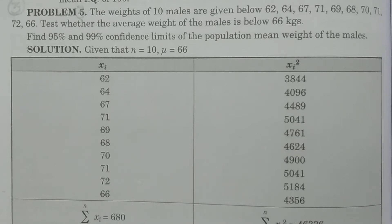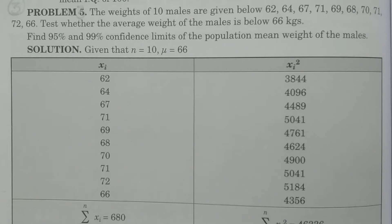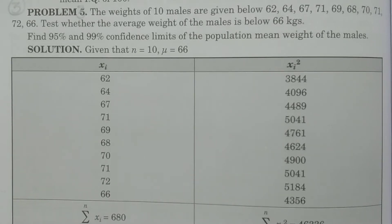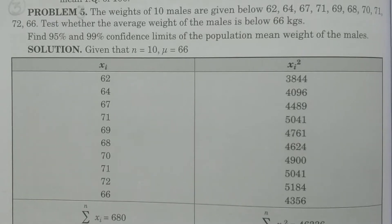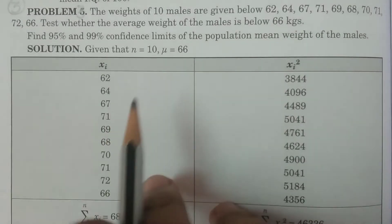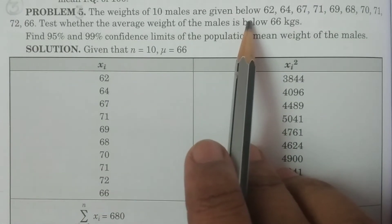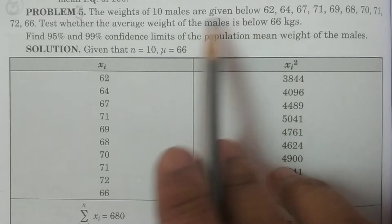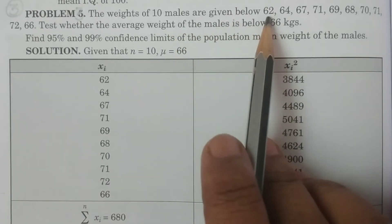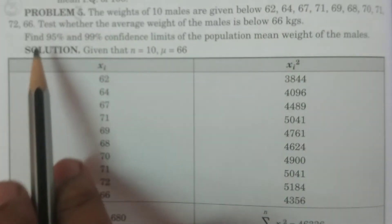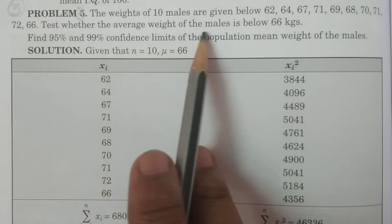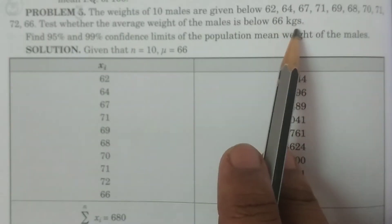Welcome to BSc Statistics students. In this class, I explain problem number 3 in t-test for single mean, small sample case. The weights of 10 males are given below: 62, 64, and so on. Test whether the average weight of the males is below 66 kilos.